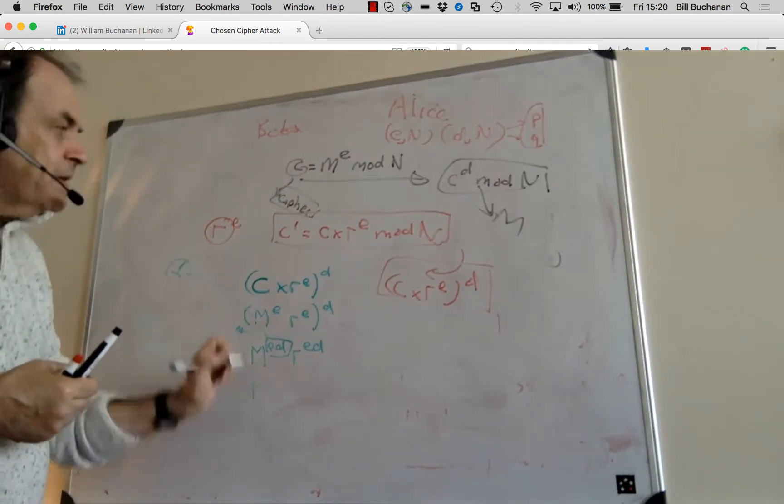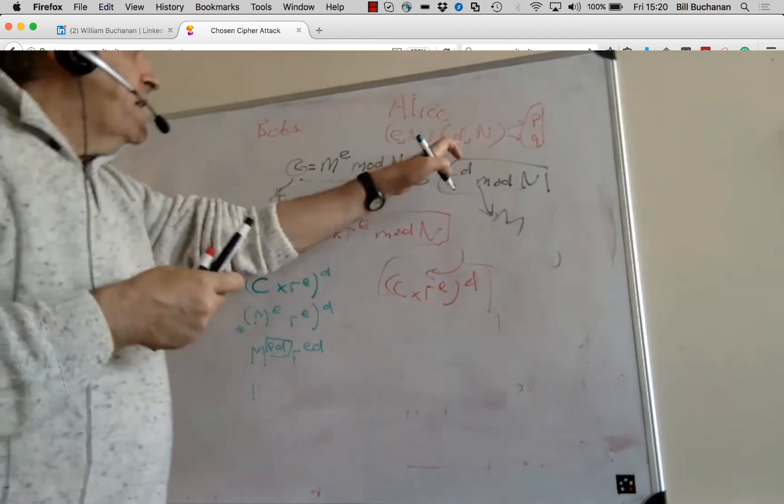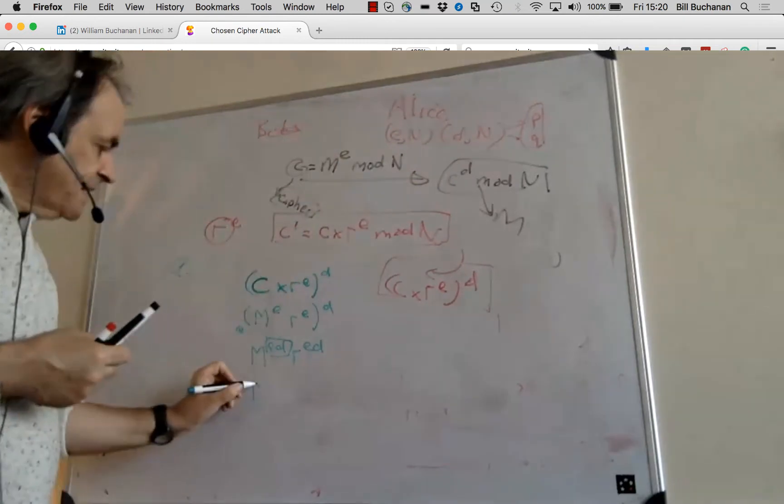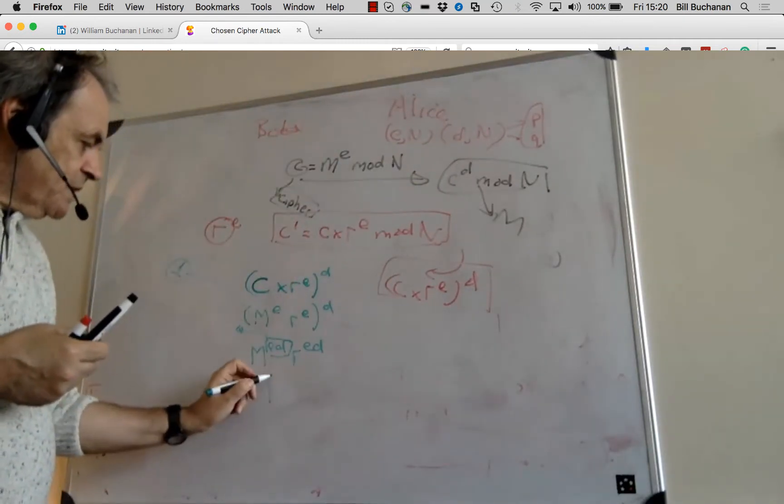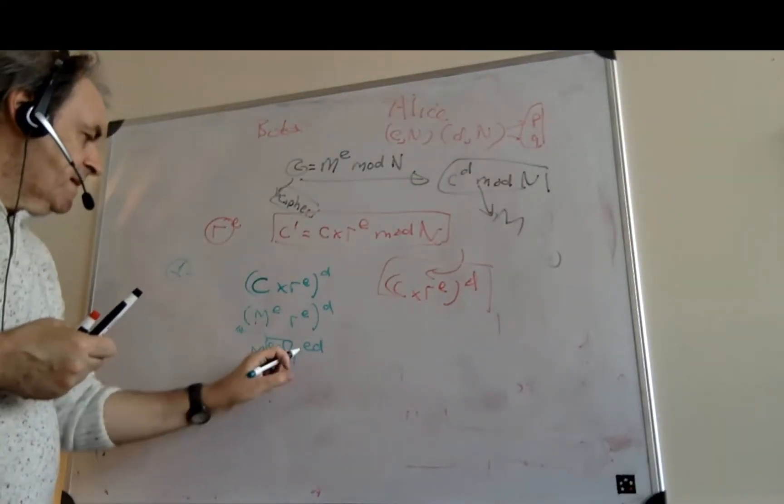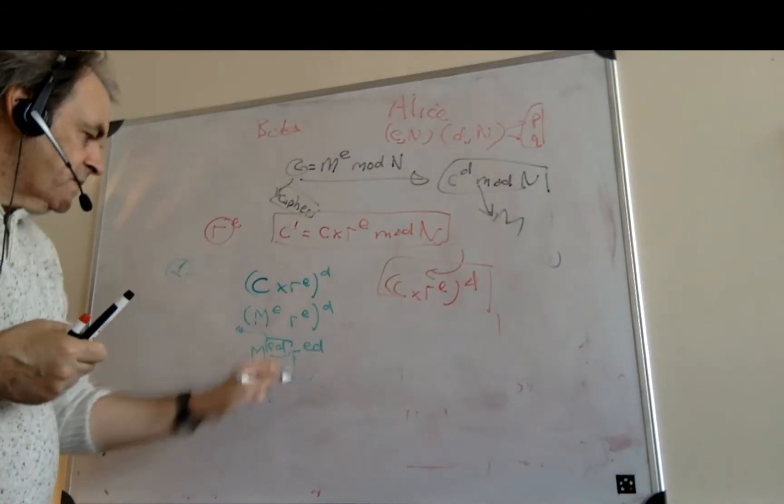Because of the way that we select the E and the D keys, that's message to the power of 1, and then that's equal to R.